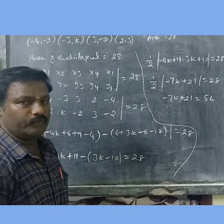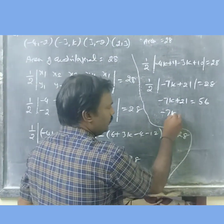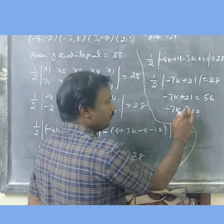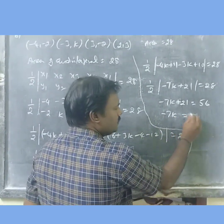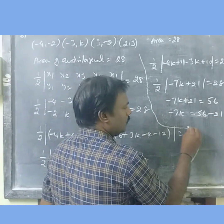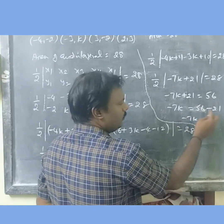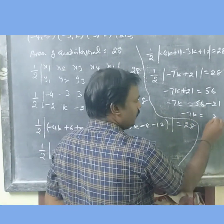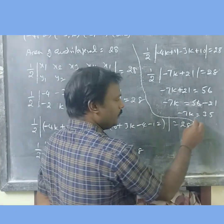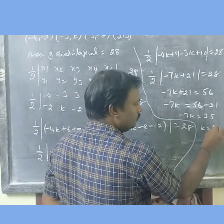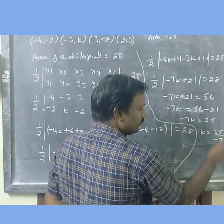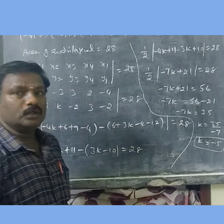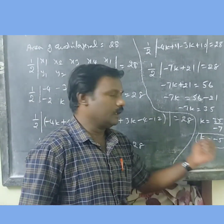So minus 7k plus 21 equals 2 into 28, which is 56. Therefore minus 7k plus 21 equals 56, which gives minus 7k equals 35, so k equals 35 divided by minus 7. Therefore, k is equal to minus 5.